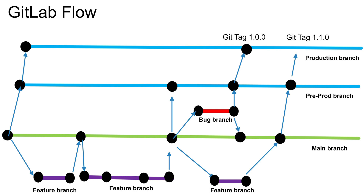In the pre-production branch you will deploy and test. If you identify any issue, just like before, you will create a bug branch from the main branch, fix it, and merge it to both the main and pre-production branches. Once everything looks fine, you will merge those changes into the production branch and deploy to production as well. If you want to create a tag, you can do so — I will cover git tags in detail in a separate video.